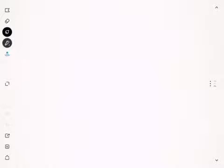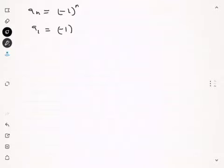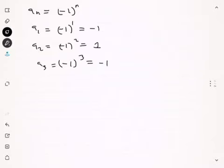Another example of a sequence would be A sub n equals negative 1 raised to the n power. A of 1 equals negative 1 raised to the first power, which is negative 1. A of 2 is negative 1 raised to the second power, which is 1. A of 3 is negative 1 raised to the third power, which is negative 1, and so on and so forth.